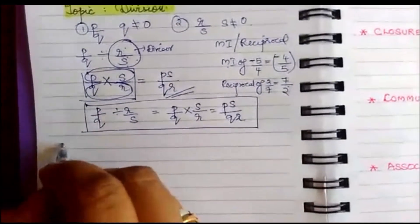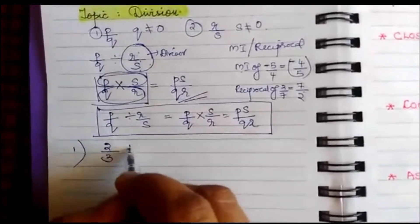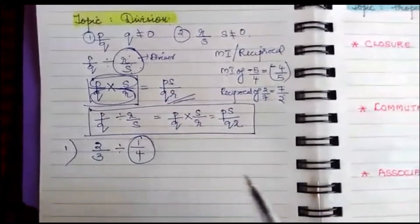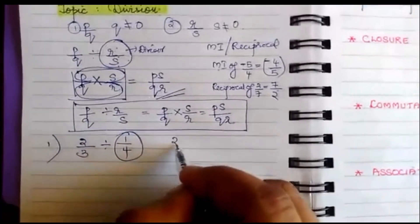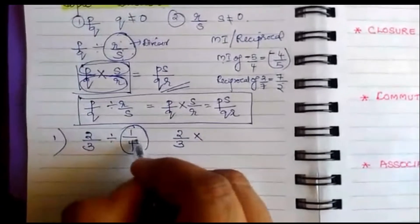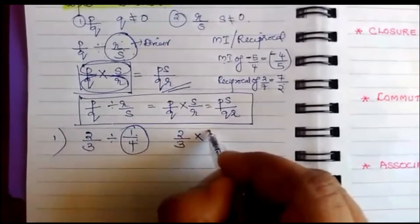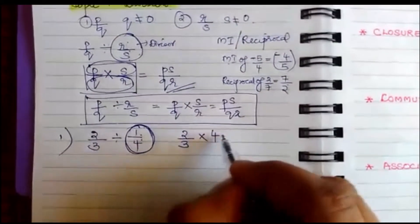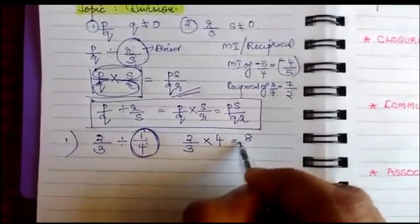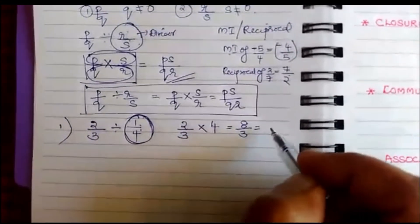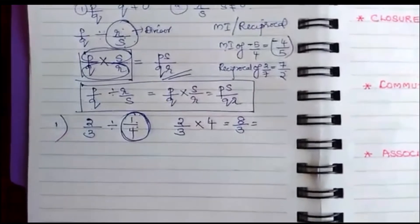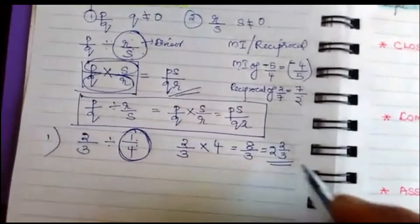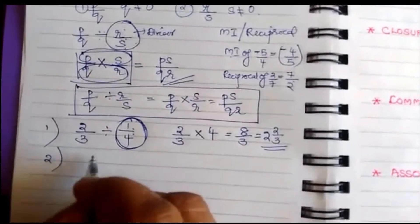Take one example: 2/3 divided by 1/4. The multiplicative inverse of 1/4 is 4, so you multiply by the reciprocal of the divisor: 2/3 × 4 = 8/3. In mixed form, that is 2 and 2/3.